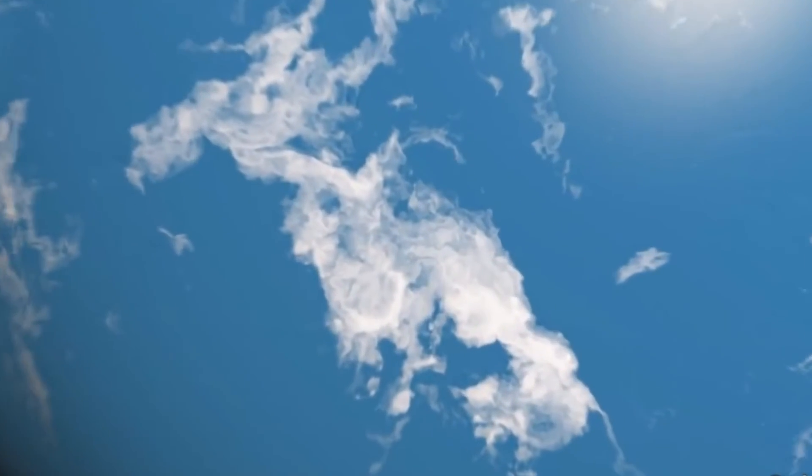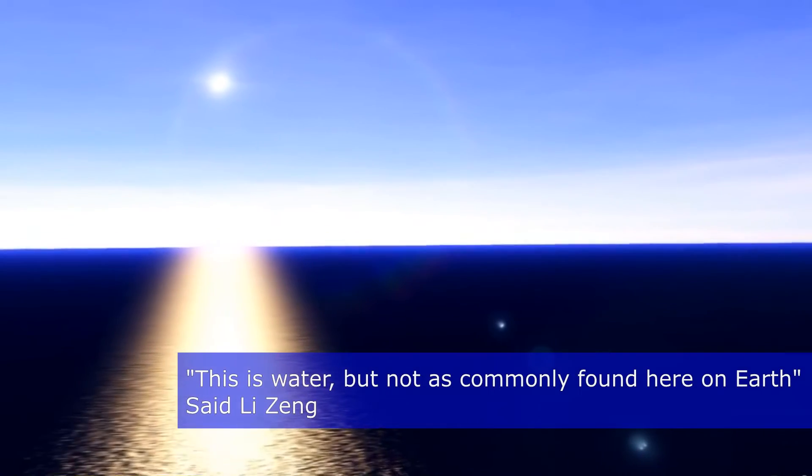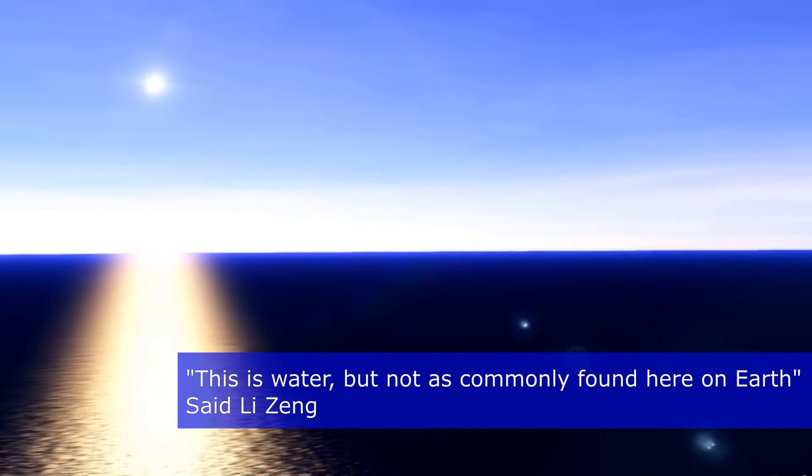Previous studies have found that many of the 4,000 confirmed or potential exoplanets fall into one of two sizes: those that are about 1.5 times the radius of the Earth, and others that are roughly 2.5 times the size of our planet.